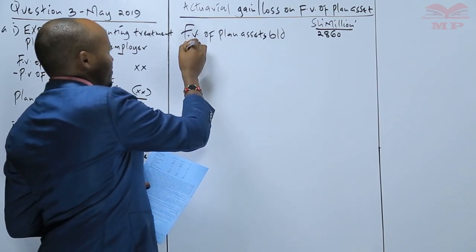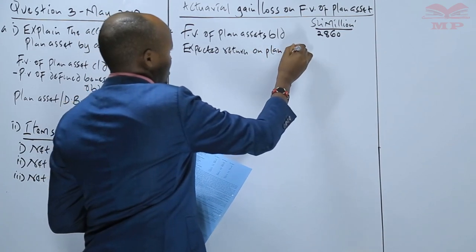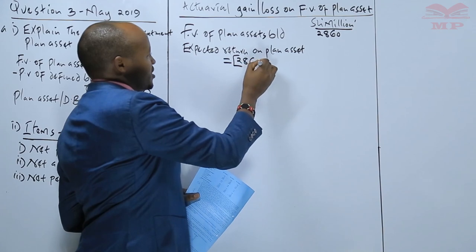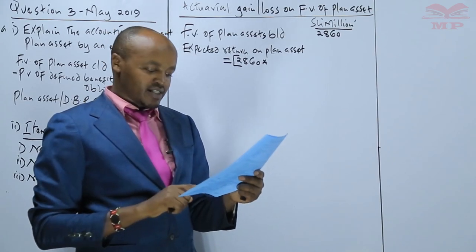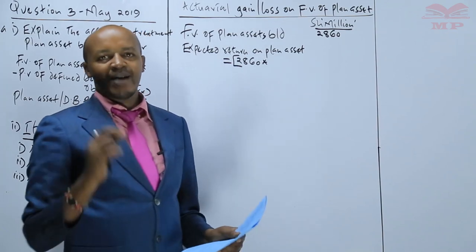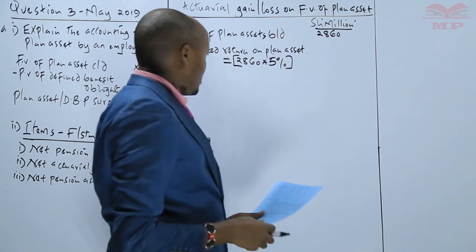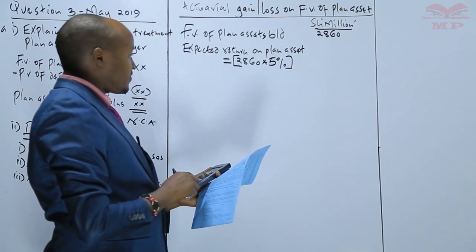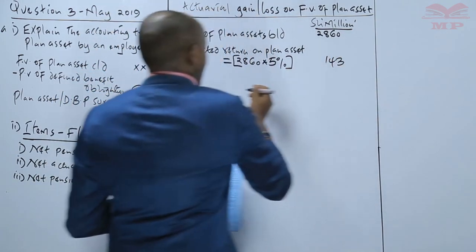To this we add the expected return on plan asset, computed based on the fair value of the plan asset at the start of the year — 2,860 million — multiplied by five percent (the market interest rate). That gives us: 0.05 × 2,860 = 143 million.